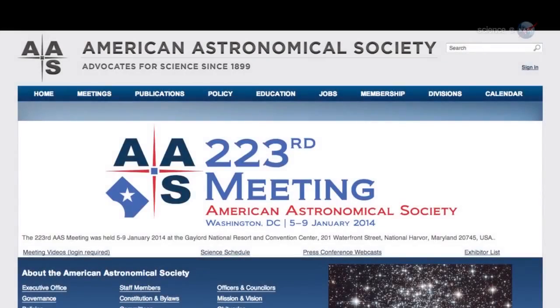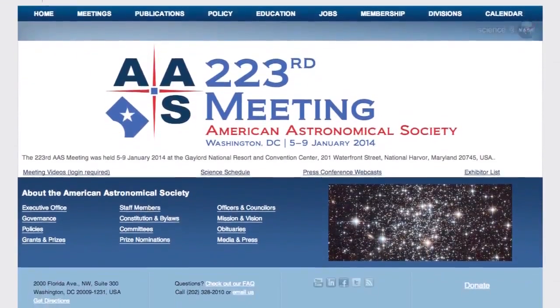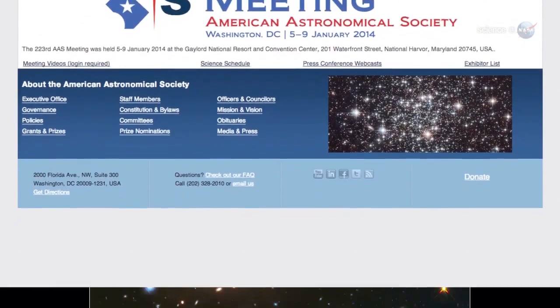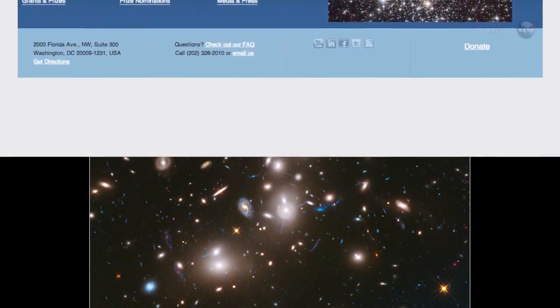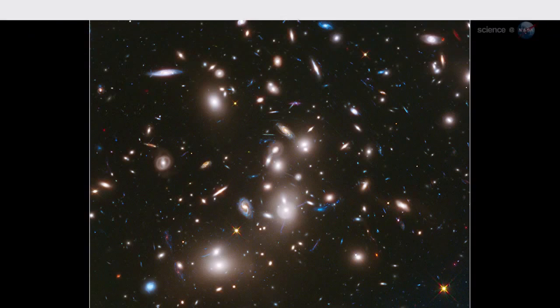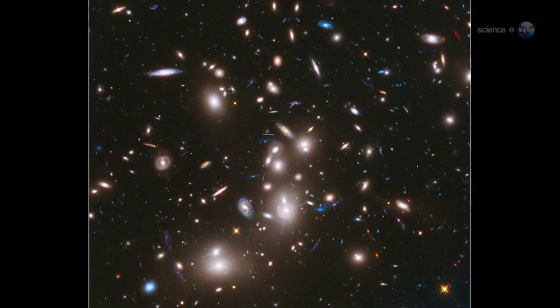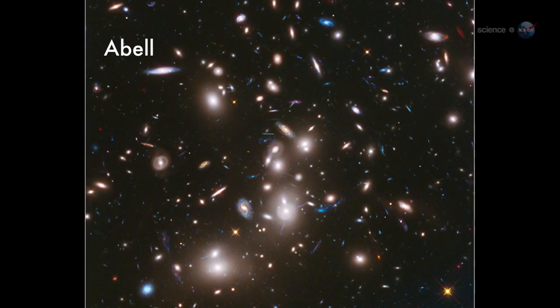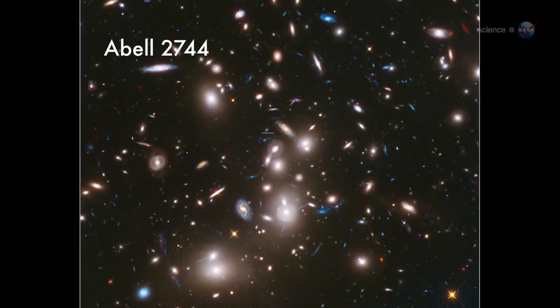At the January 2014 meeting of the American Astronomical Society, researchers revealed a patch of sky seen through a lens more than 500,000 light-years wide. The lens is actually a massive cluster of galaxies known as Abell 2744.